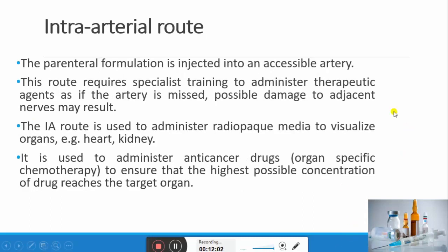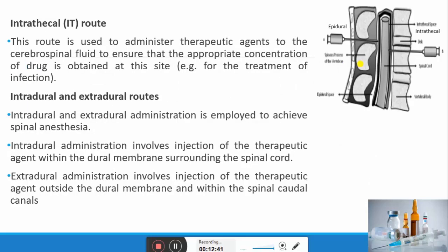The intra-arterial route involves administering the parenteral formulation directly into an accessible artery of an organ. It requires specialized training because if the artery is missed it may damage the adjacent nerve. This route is used for administration of radio-opaque media to visualize organs like the heart or kidney, and for administering anti-cancer drugs in organ-specific chemotherapy to ensure the highest possible drug concentration reaches the targeted organ. It is also used to administer therapeutic agents to the cerebrospinal fluid to ensure appropriate drug concentration, and is used for treatment of infections after neurological surgeries.